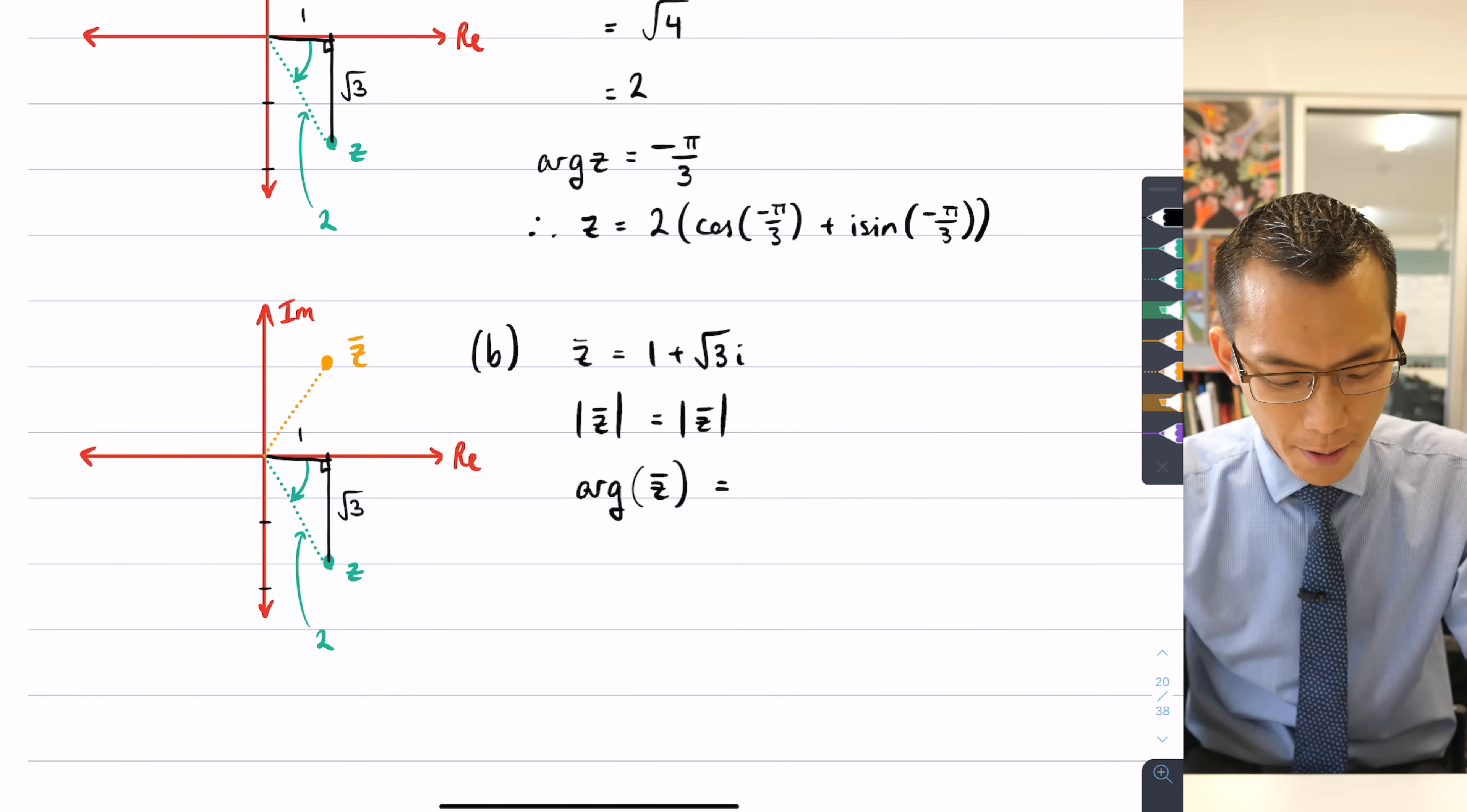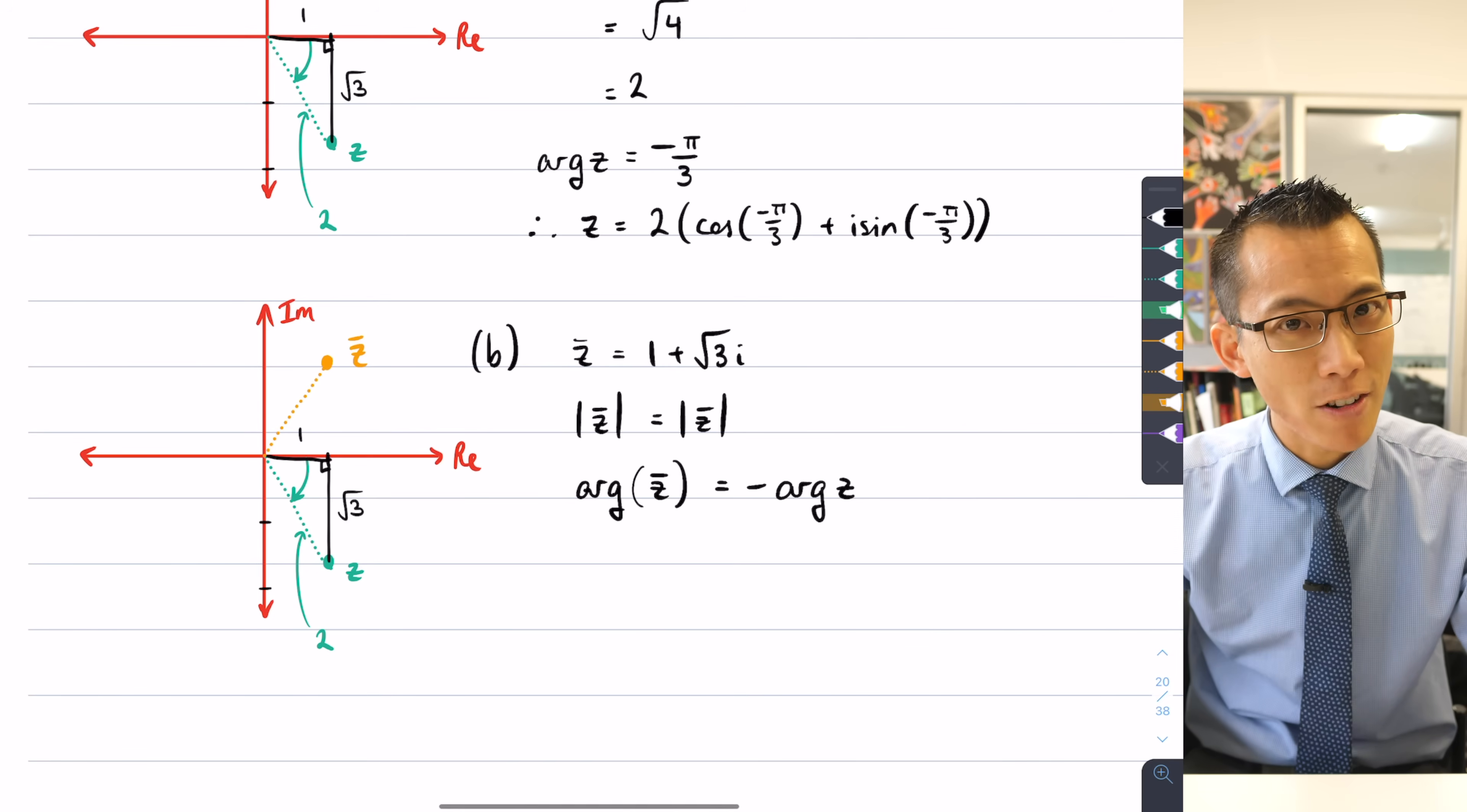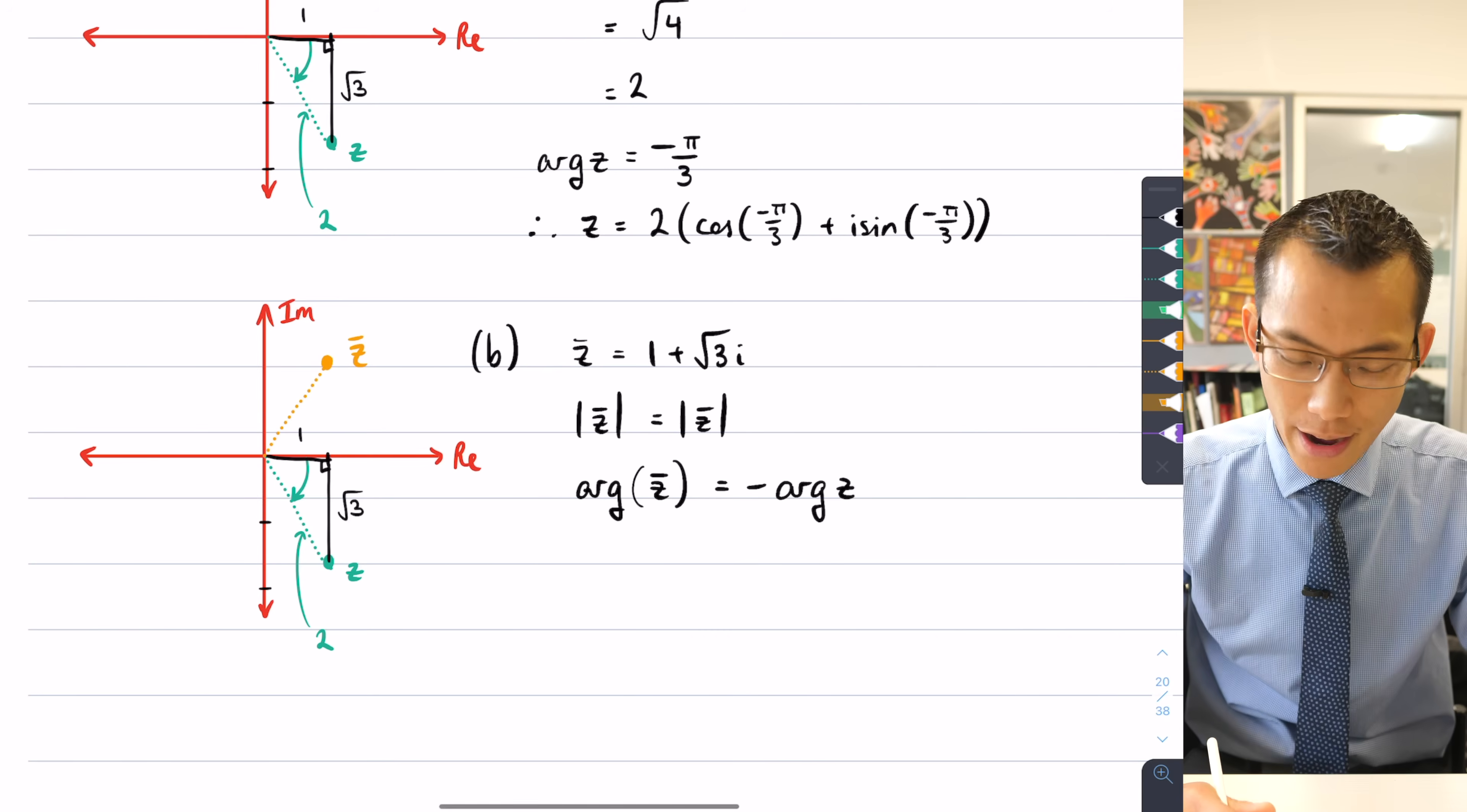Anti-clockwise is positive on the complex plane. So what I can say is that the argument of z̄ is going to be the opposite negative of the argument of z, right? Which in this case, we went from negative, -π/3 is going to become π/3.